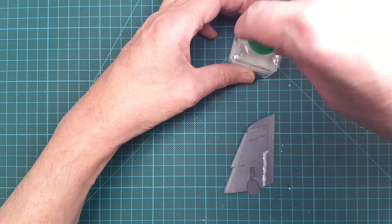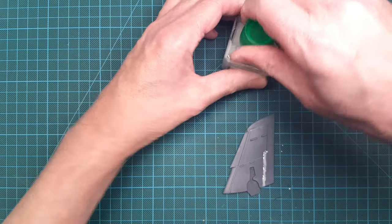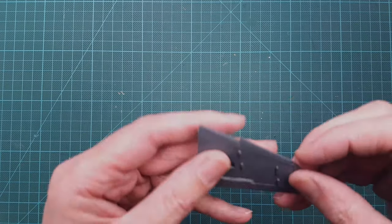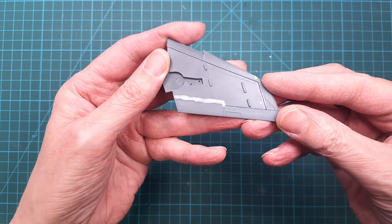I normally leave the part to dry for 24 hours, but the longer the better. When it's fully cured, the liquid sprue should have a gloss surface and it should be completely hard.